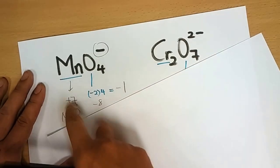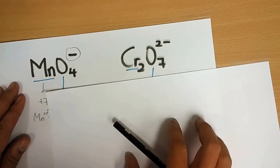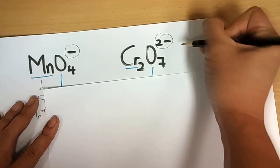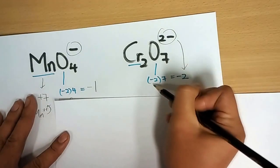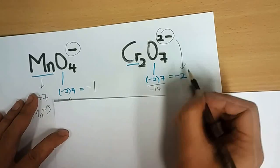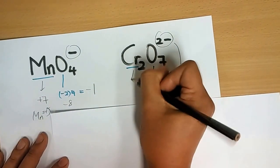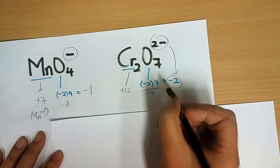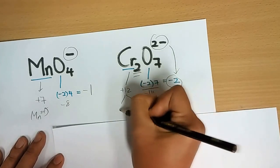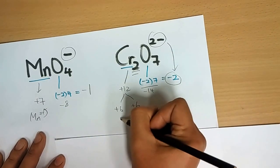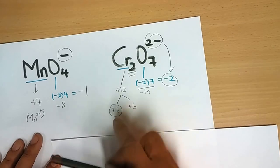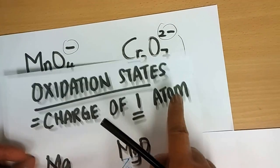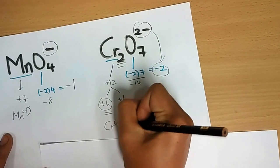For dichromate Cr₂O₇²⁻: there are two chromium and seven oxygens, and the overall charge must be minus two. Seven oxygens at minus two each gives minus fourteen. So two chromium atoms plus minus fourteen must equal minus two, meaning the two chromium atoms together are plus twelve. Because there are two chromium atoms, each chromium is plus six. The oxidation state of chromium is plus six, because oxidation state refers to the charge of one atom.